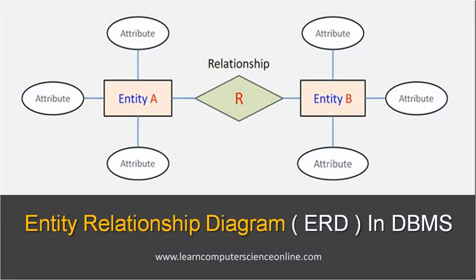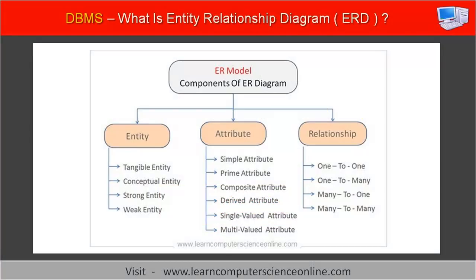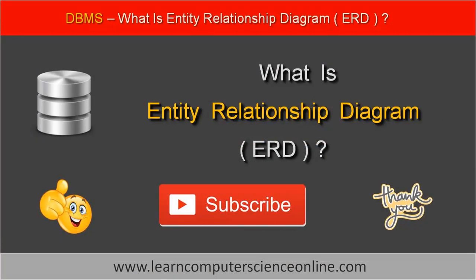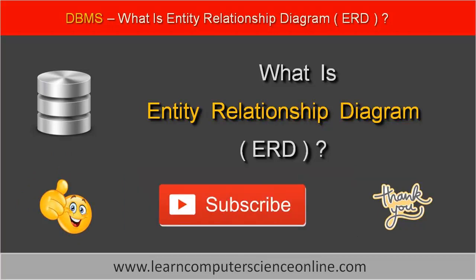The ER diagram is an easy-to-use graphical tool used in the database design process to understand the database structure. That brings us to the end of this video tutorial. We have discussed what is Entity Relationship Diagram and all four important components of the ER model: the concept of database entity, its attributes, what is relationship, and the concept of cardinality ratios or mapping of cardinalities. Please visit learncomputerscienceonline.com to learn computer science online. If you liked this video, please give us a thumbs up and consider subscribing to the channel. Thanks for watching!